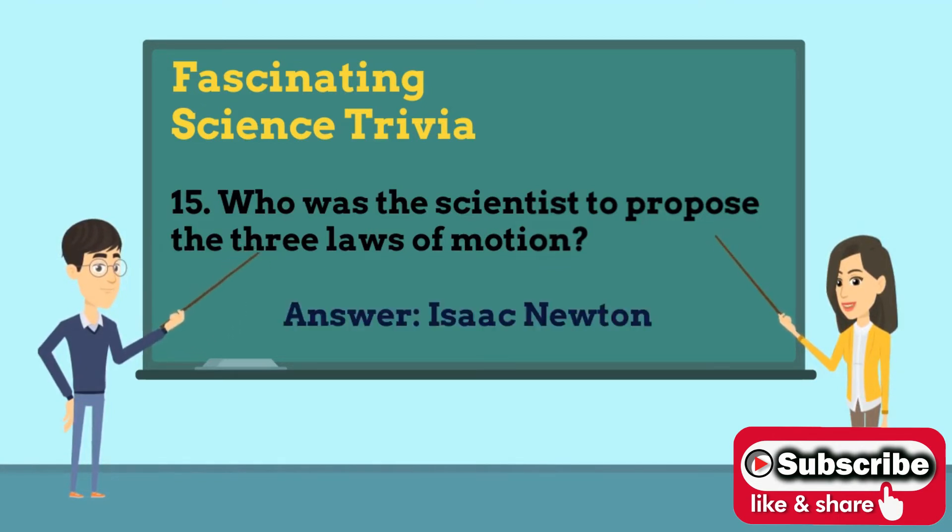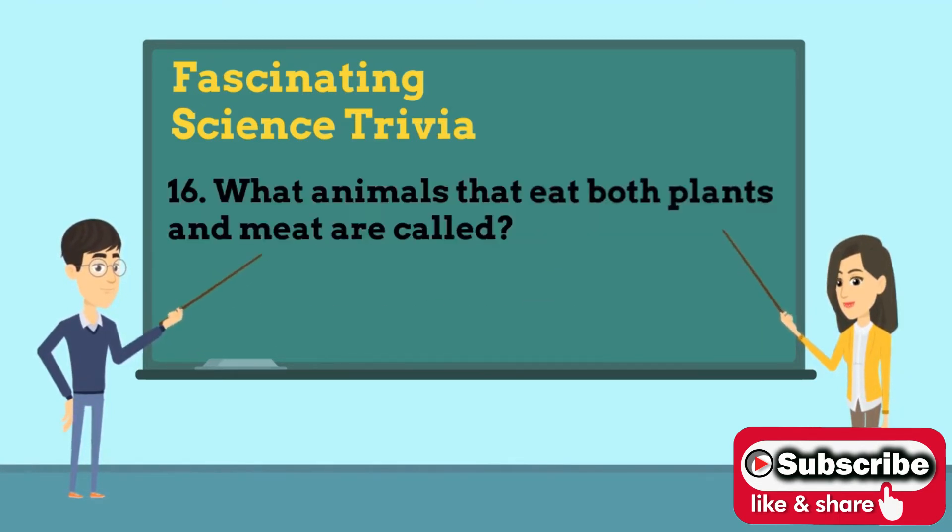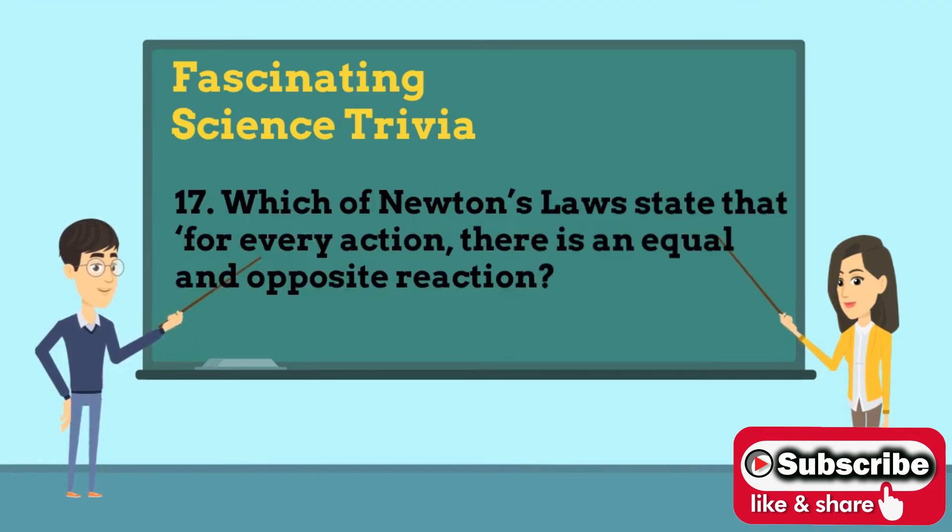three laws of motion? Answer is Isaac Newton. Number 16: What animals that eat both plants and meat are called? Answer is omnivores. Number 17: Which of Newton's laws states